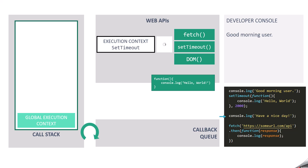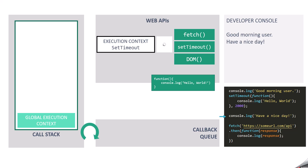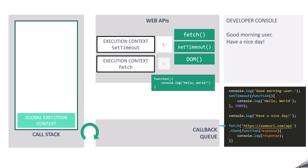Next, we call console.log again. An execution context is created, it logs 'have a nice day' in the developer console, and once complete, gets popped off the execution stack. Then we call the fetch API — an execution context is created, and since fetch also runs asynchronously, it is handed over to the web API where its job is to load data from the specified URL. We also specify a callback function for the fetch API that will execute when the requested data is completely loaded, so that callback gets registered and waits in the web API.